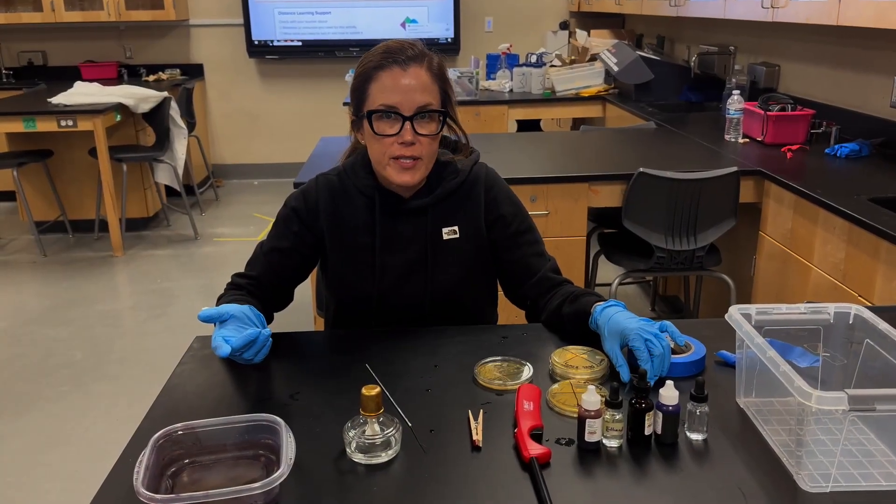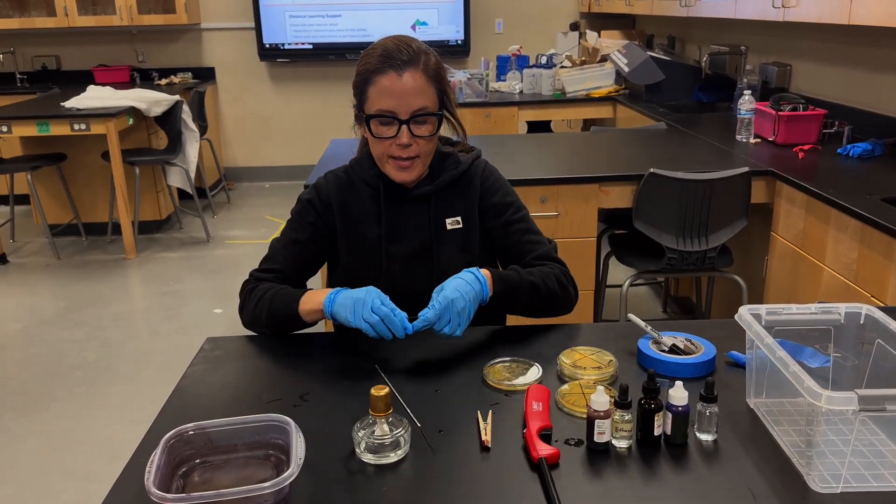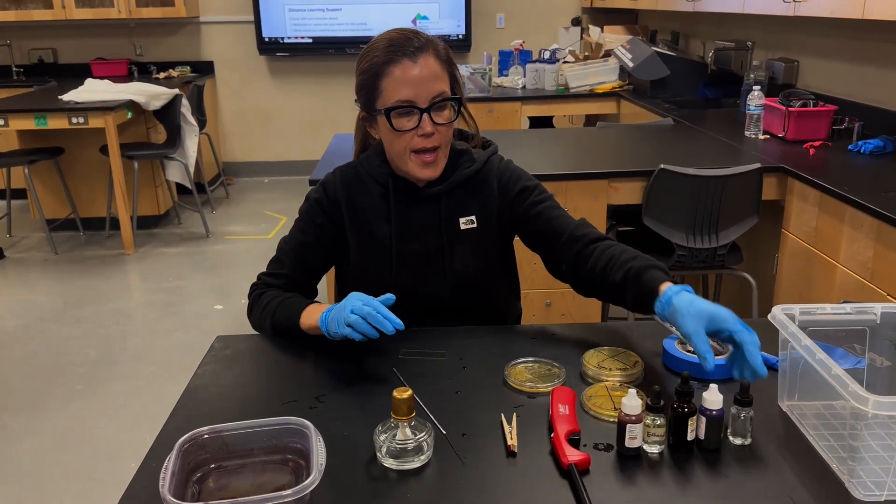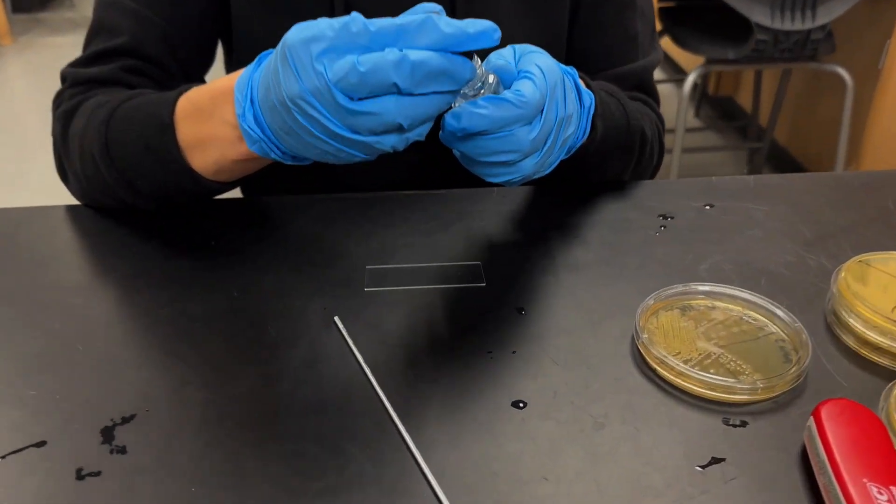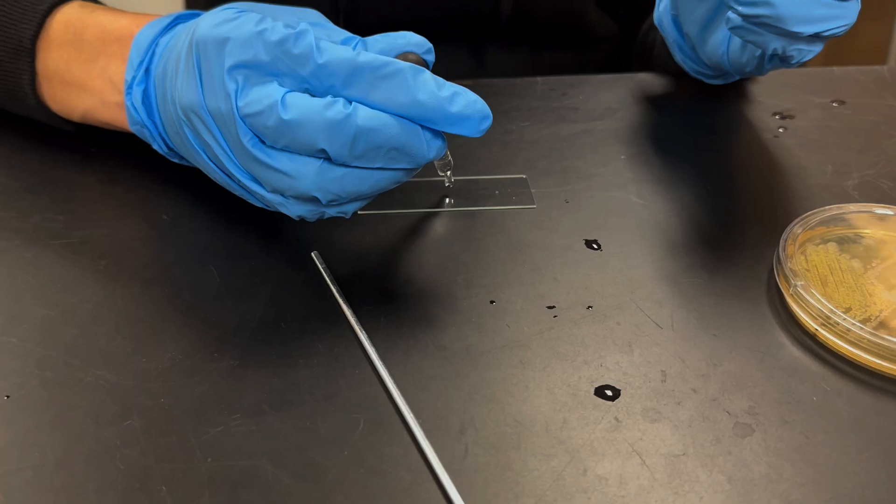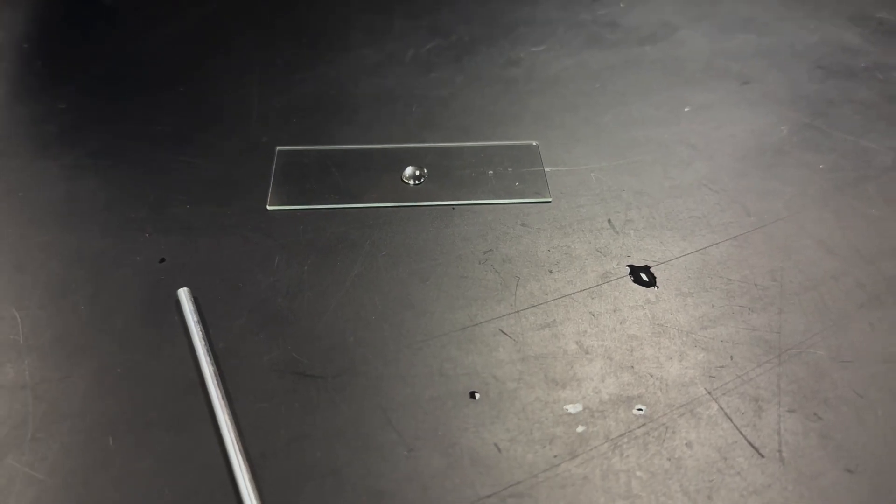When you're ready to begin with your first sample, you're going to take the microscope slide. Just place it in front of you. And you're going to put one small drop of water in the center of the slide. It's important that it's a small drop of water because we want it to air dry before we can move on to the next step of the experiment.